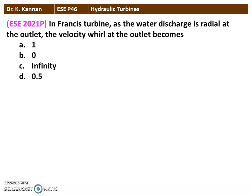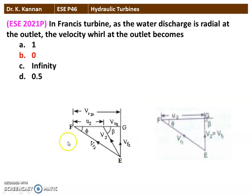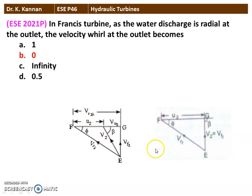The next question: in a Francis turbine, as the water discharges radially at the outlet, the velocity of whirl at the outlet becomes 0. Looking at the outlet velocity triangle of the Francis turbine: V2 is the absolute velocity, VF2 is the flow velocity, VW2 is the whirl velocity, U2 is the peripheral speed, and VR2 is the relative velocity. For radial discharge, V2 merges with the flow direction VF2, so V2 equals VF2, and the angle beta becomes 90 degrees. Therefore VW2 becomes 0, and U2 equals VR2. The velocity of whirl at the outlet becomes 0 for radial discharge in the Francis turbine.